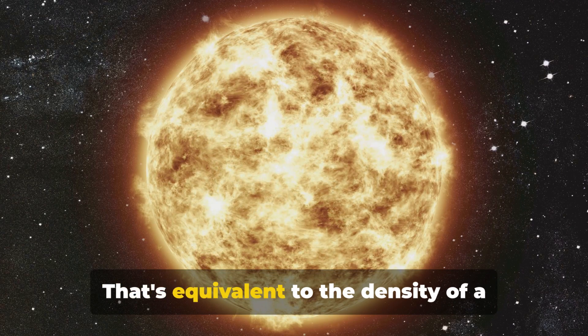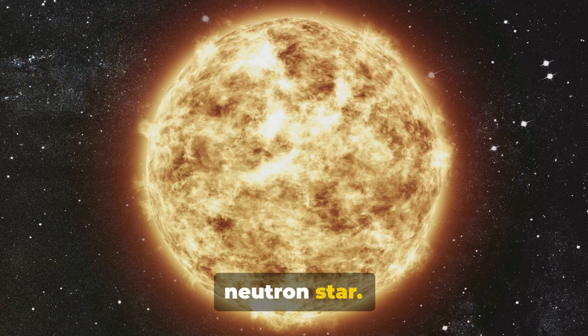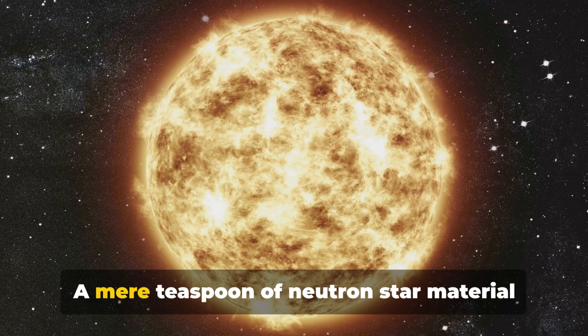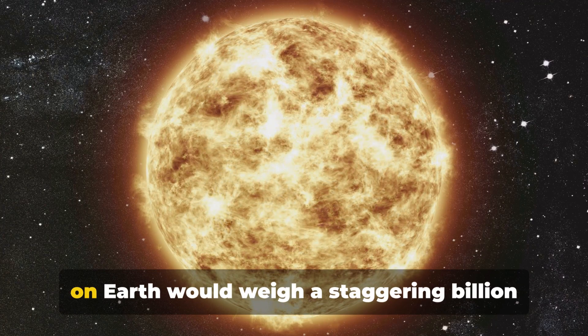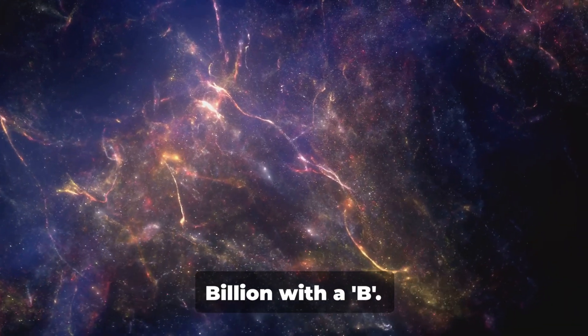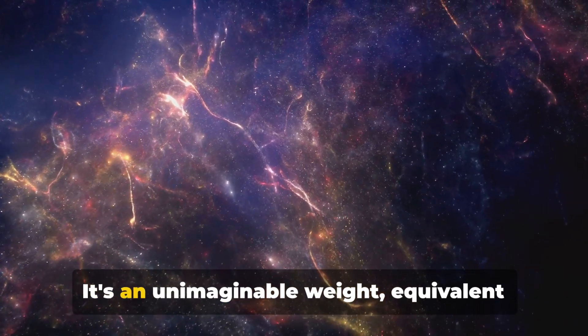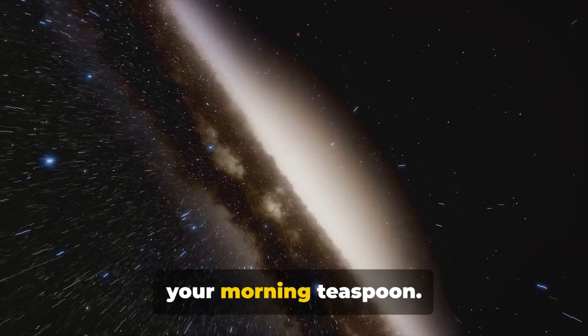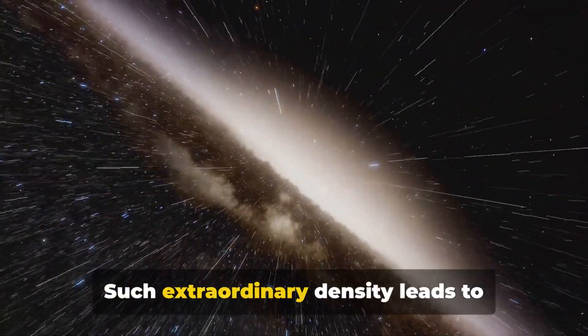That's equivalent to the density of a neutron star. To understand this further, consider a teaspoon, a mere teaspoon of neutron star material on Earth would weigh a staggering billion tons. Yes, you heard that right, billion with a B. It's an unimaginable weight equivalent to a mountain range, all compressed into your morning teaspoon.